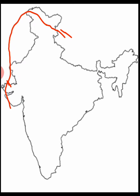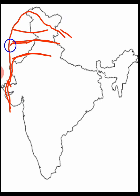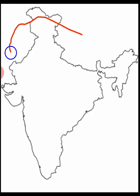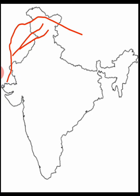Indus river has many tributaries — rivers that come and join the Indus river and then flow into the Arabian Sea. So which are the tributaries? Here you have Jhelum river, after that Chenab is a tributary of Jhelum, then you have Ravi, then Sutlej, and then Beas is a tributary of Sutlej. So these five rivers — Jhelum, Chenab, Ravi, Sutlej, Beas — all are the tributaries of Indus river.